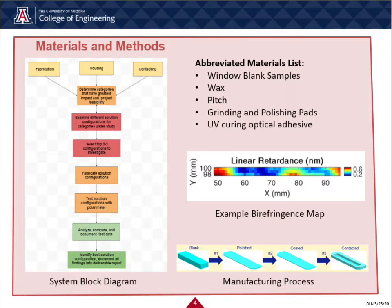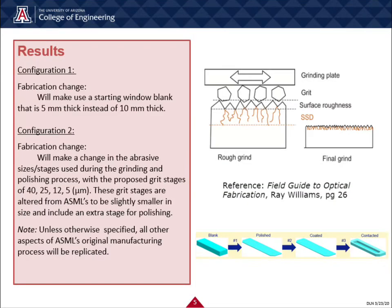Our final results included two fabrication configurations and three contacting configurations. Upon researching optical fabrication techniques and stress contributors, we found that the grinding and polishing process has the effect of leaving residual cracks known as subsurface damage within the glass, leading to birefringence. Typically, these cracks can be up to three times the grit size, so each successive abrasive stage should grind off at least three times the previous grit size from the material. This implies that more material to grind off leads to a higher probability of remnant subsurface damage, and larger grit sizes lead to larger remnant subsurface damage.